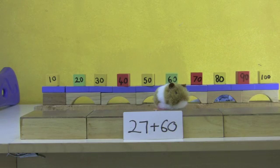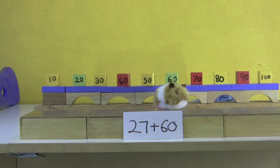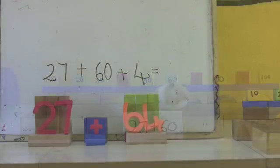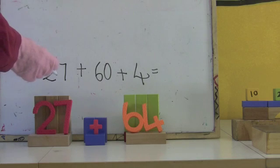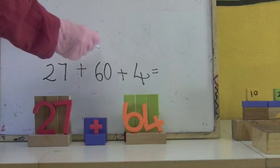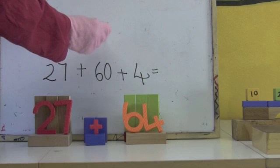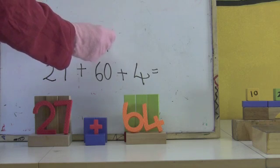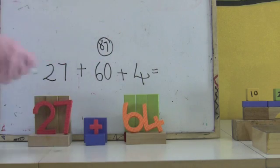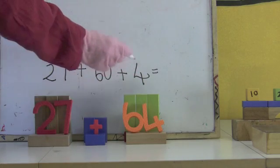I've stopped at 60, and the answer is 87. I added 27 and 60, so I've got to here, and the answer was 87. Now I need to add on the four. So 87 add four.